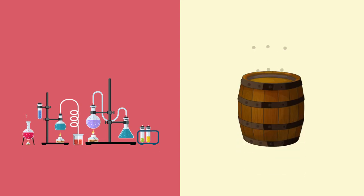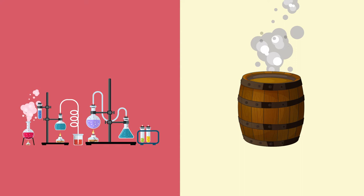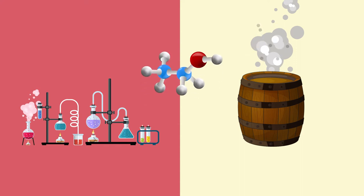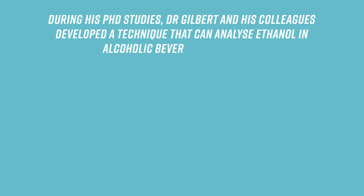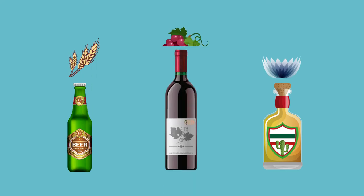Ethanol, the alcohol found in beverages, can be produced synthetically in the laboratory or naturally by fermenting plant sugars. As they have different histories, Dr. Gilbert suspected that the ratio of carbon isotopes in fermented ethanol would be different from that in synthetic ethanol. During his PhD studies, Dr. Gilbert and his colleagues developed a technique that can analyze ethanol in alcoholic beverages, including beer, tequila, and wine.